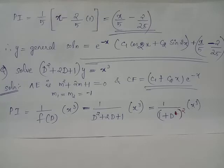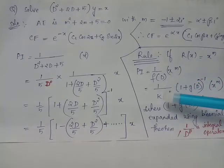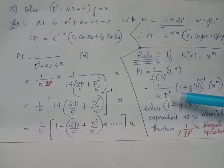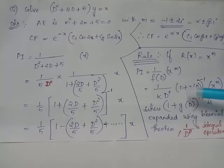Since the RHS is of the format x raised to m, we use the rule: PI equals 1 by f(D) acting on x raised to m. We transform the operator f(D) as k times D raised to b, multiplied by (1 + g(D)) the whole inverse acting on x raised to m, wherein this operator can be expanded using the binomial theorem.